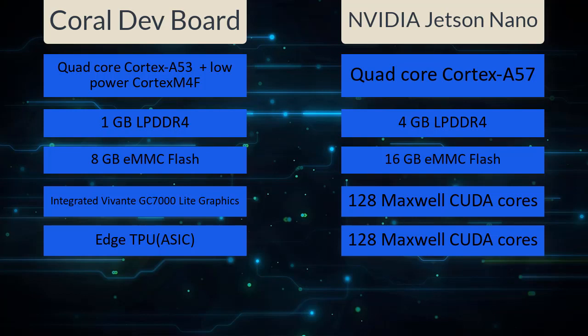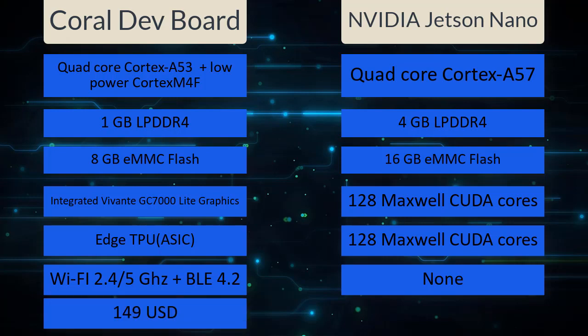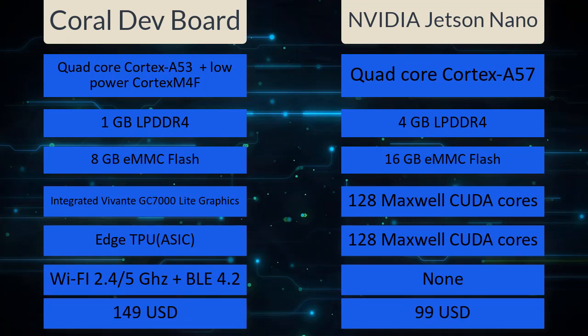For wireless connectivity, Jetson Nano has none — you need to buy a separate wireless adapter. Google Coral Dev Board has onboard Wi-Fi on both 2.4 and 5 GHz bands, plus Bluetooth 4.2 and Bluetooth Low Energy. On price, the Google Coral Dev Board is slightly higher at $149, while the NVIDIA Jetson Nano is cheaper at $99.